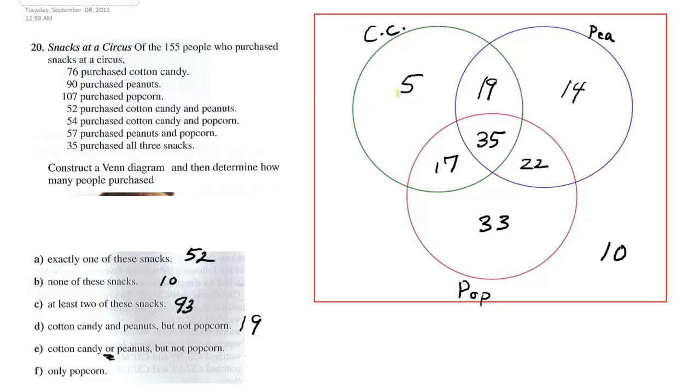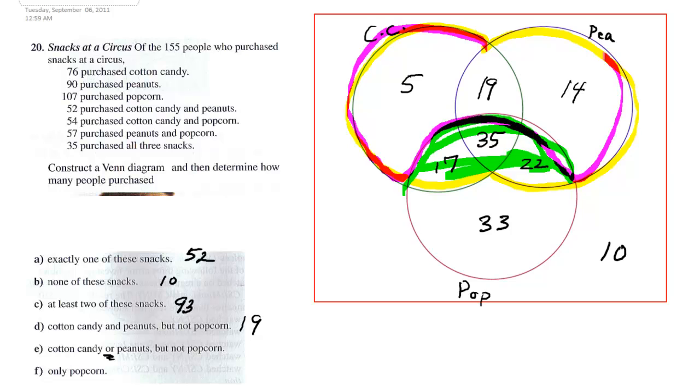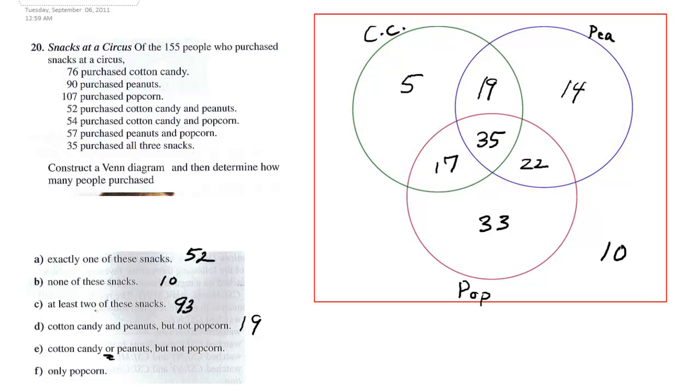But because they're saying, but not popcorn, we're leaving out anything that's in popcorn. So when we leave out these guys, we're left with the mouse ears. So 5, 19, and 14 is what? 38. So my answer will be 38. And then only popcorn is 33. That's right here. So that covers that one. That's how you do that one.